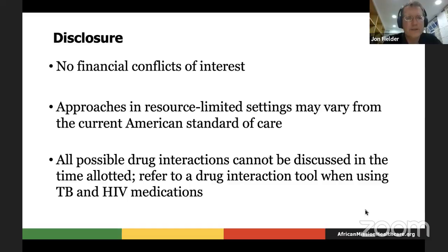Something about the epidemiology: TB is the leading infectious disease killer worldwide — not everyone realizes that. It's also the leading killer of people with HIV, accounting for about a quarter of all deaths of people with HIV worldwide. That's a tragedy, but it's also an opportunity because TB is a treatable illness. If we can diagnose and treat it earlier, we can really prevent a lot of those deaths.